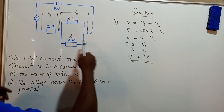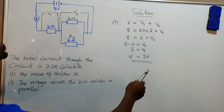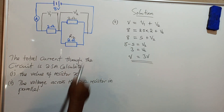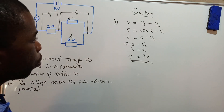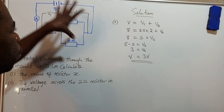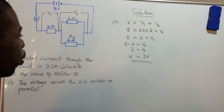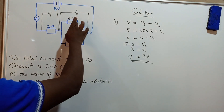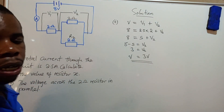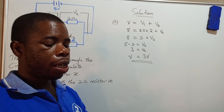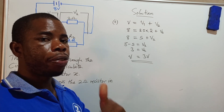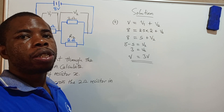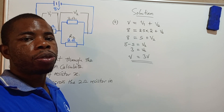So the voltage across the parallel section is 3 volts. This is how you should answer this question — it is a bit tricky and not easy, but that is how it should be done. I hope this video has helped you. Give it a like, let me know in the comment section, bye and see you in the next lesson!